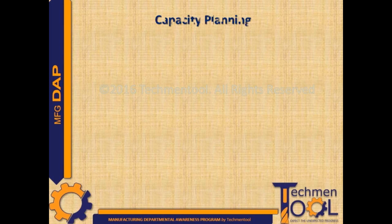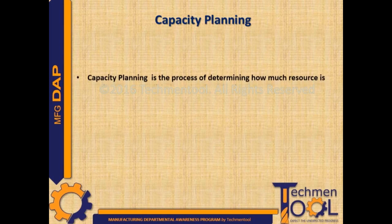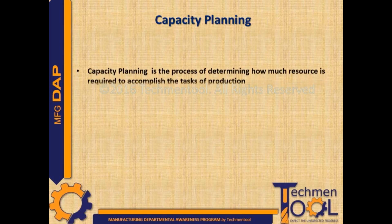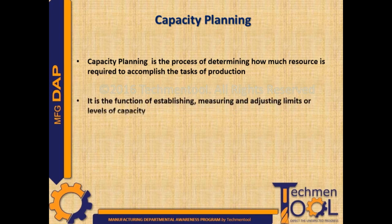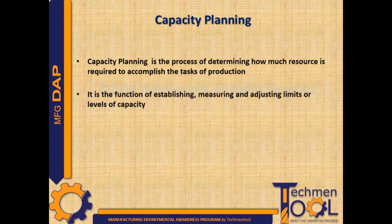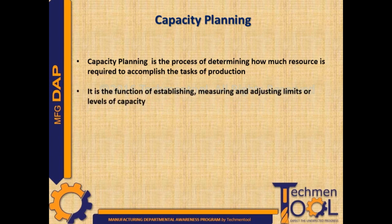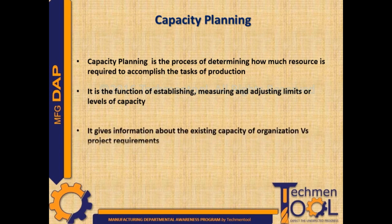Capacity planning is the process of determining how much resources are required to accomplish the tasks of production. It is the process of comparing the requirement of raw material, machinery, materials, etc., against the existing stock for customer needs. It is the function of establishing, measuring, and adjusting limits or levels of capacity.